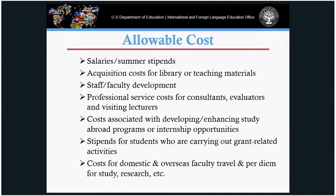Allowable costs include summer stipends and salaries, acquisition costs for library and teaching materials, professional service costs for consultants, and costs associated with developing and enhancing study abroad programs. Please note that for student costs, you must limit your budget to 10% of the actual federal request. For study abroad costs, it should be no more than 10%. Costs for domestic and overseas faculty travel can also be included in your budget.